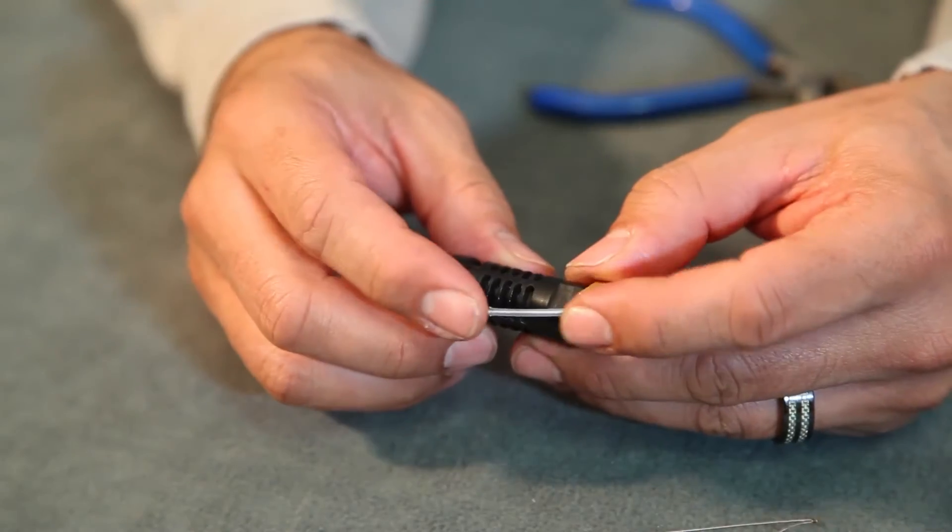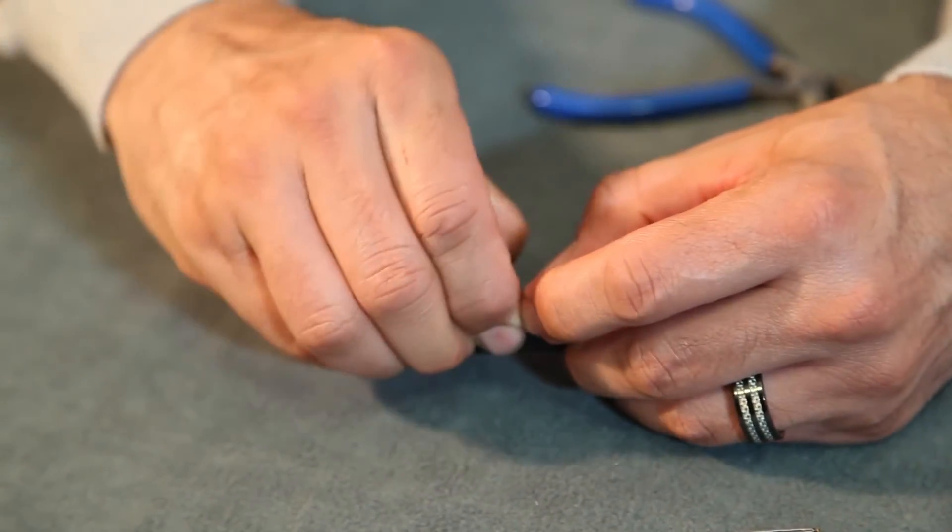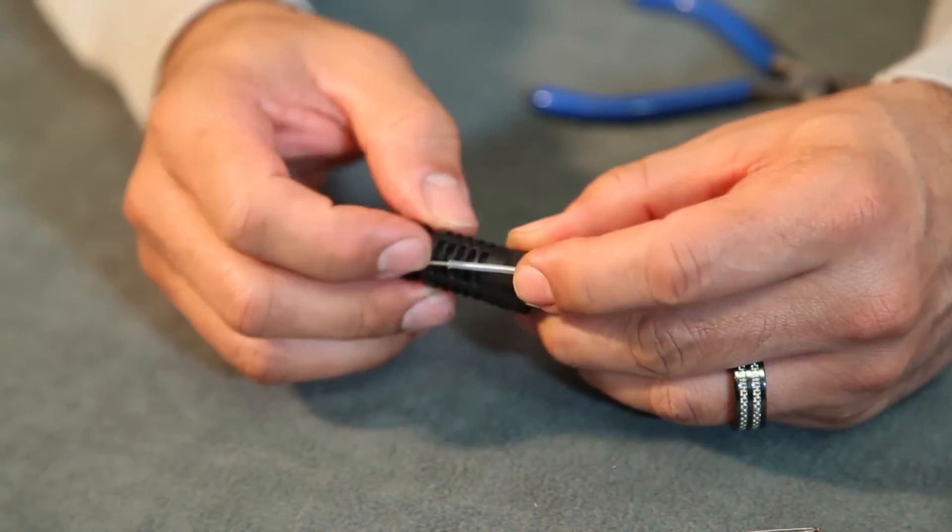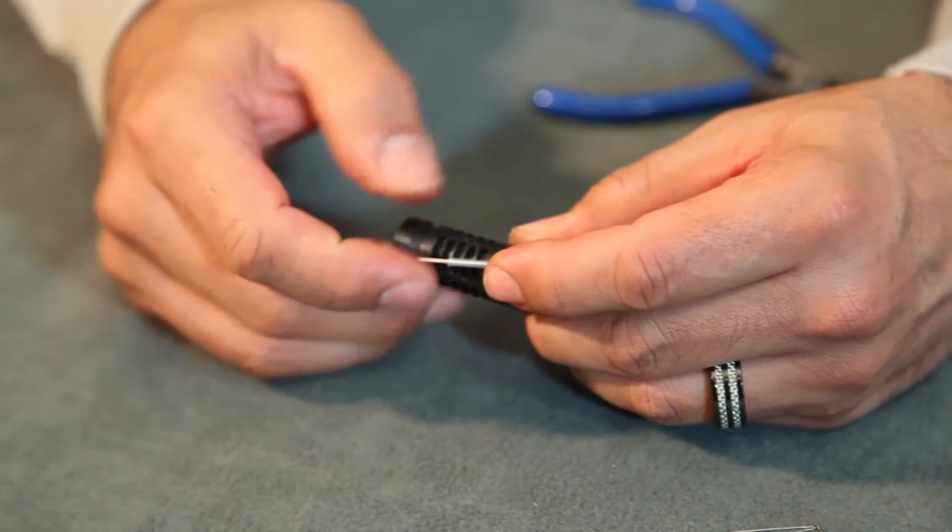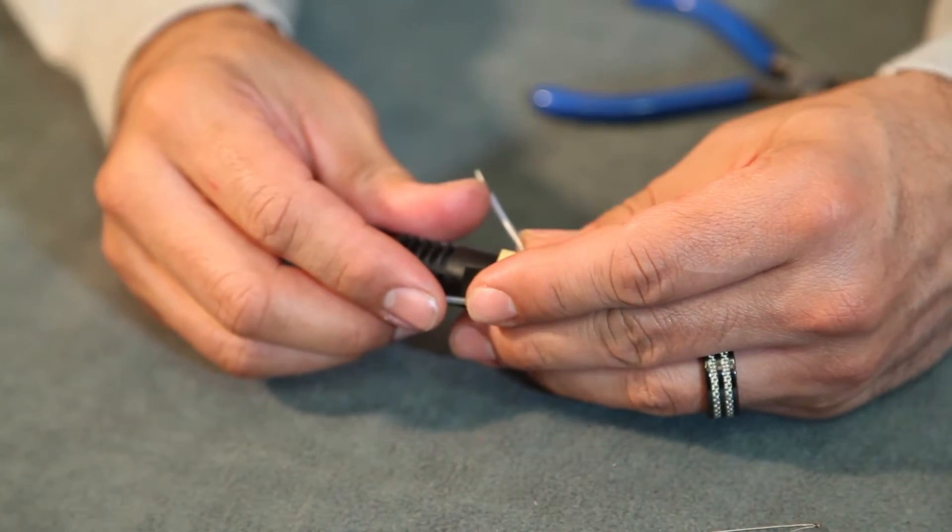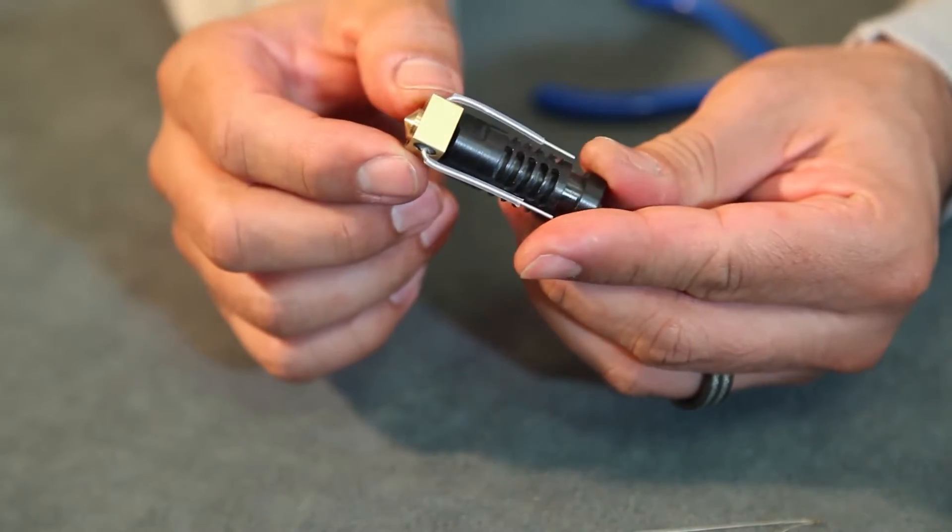Once you've got the heating element all the way in there and secured in there, you want to push them up against the printhead body snug, keeping your rubber protector sleeves here in place as such. So it'll look like this.